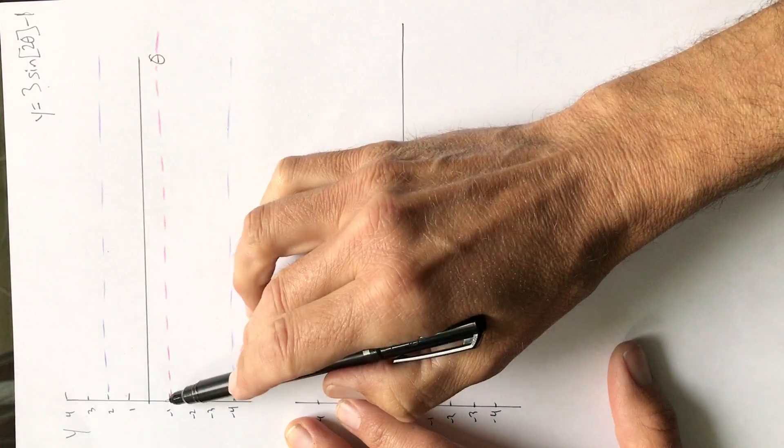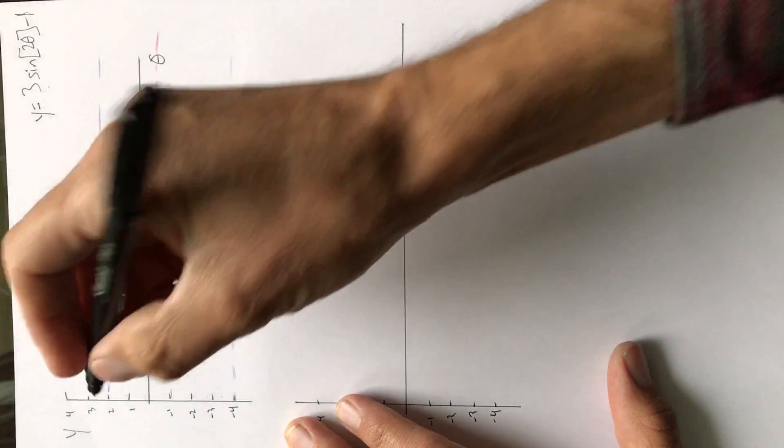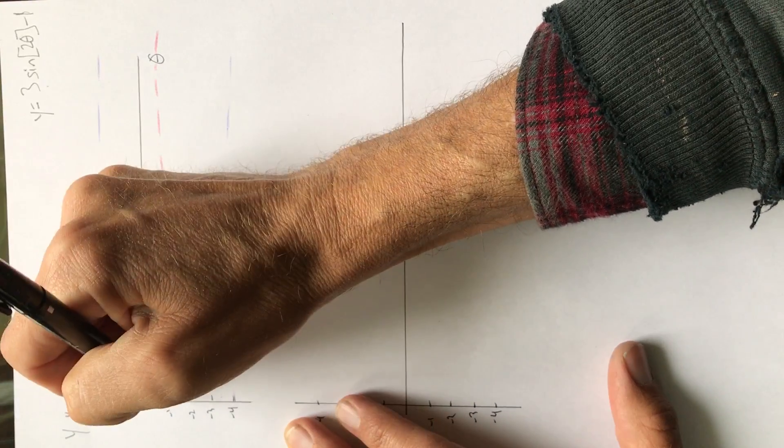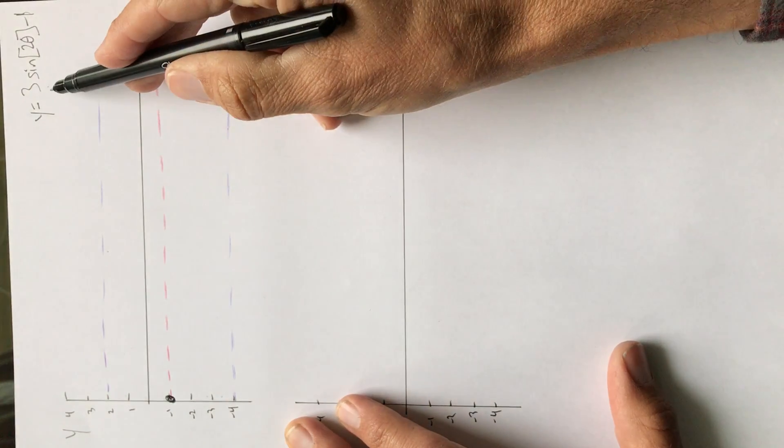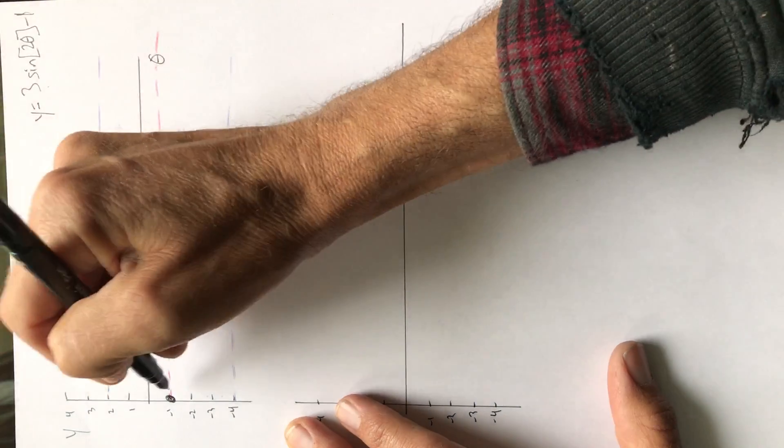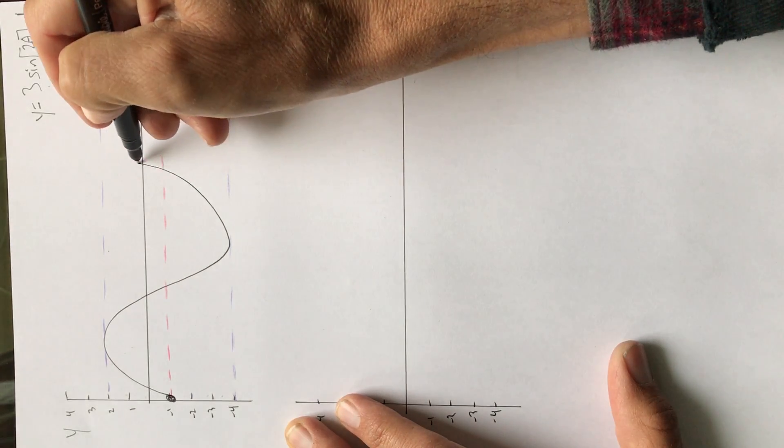It's a sine function. So I know I'm going to start in the middle. There's no horizontal shifting. So I know the sine function is going to start right here at the midline, right there. I know I have to go up three and down three from there. So I just go up three, down three, and back up like that.